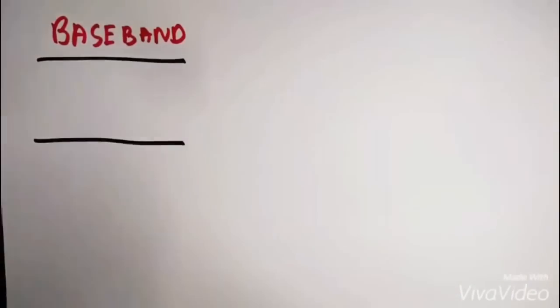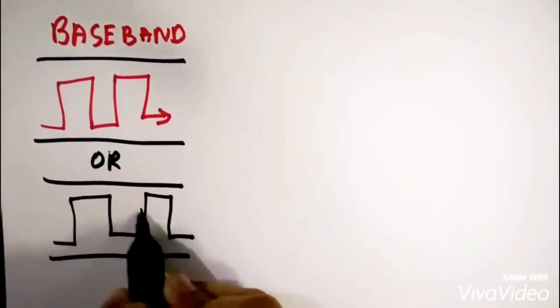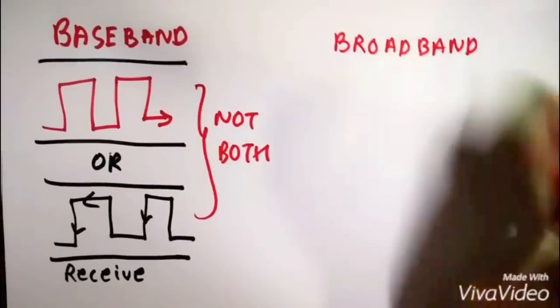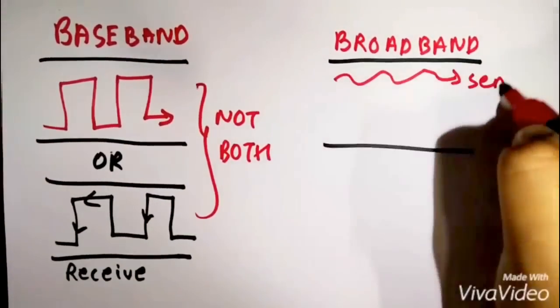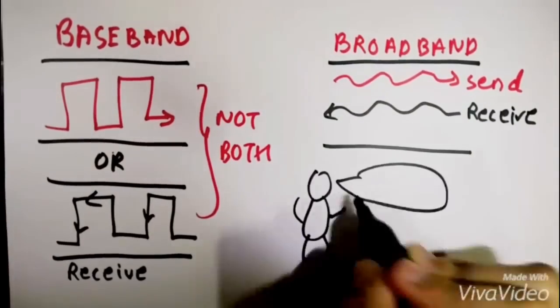Another differentiating property is that baseband allows you to either send or receive a signal but not both at the same time, whereas broadband allows you to send as well as receive the signals both at the same time. But when do we use each of these?